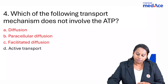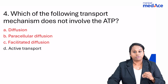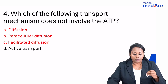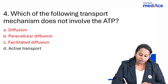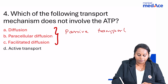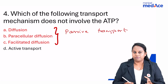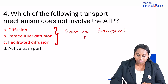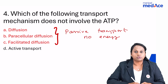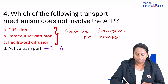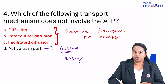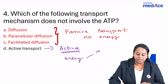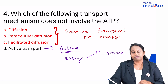Question number 4: which of the following transport mechanism does not involve ATP? Some students said the question asked which involves ATP — either way, the concept is the same. The first three options — diffusion, paracellular diffusion, and facilitated diffusion — are passive types of transport. Passive transport requires no energy, no ATP. Active transport requires energy, and if that energy comes from breaking down ATP, it is called primary active transport.